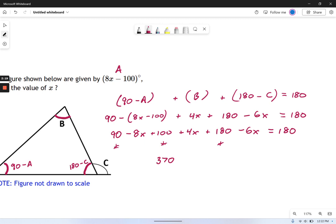And then if I combine all my x's together, that's negative 8x, positive 4x, negative 6x. So let's see, negative 4x. That looks like negative 10x. And then I still have the other side of the equation, which is just a boring old equals 180.